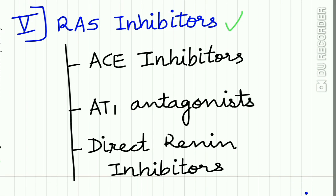The fifth group is RAS inhibitors, including ACE inhibitors, AT1 antagonists, and direct renin inhibitors, covered in a separate lecture. ACE inhibitors end in '-april' — captopril, enalapril, lisinopril, perindopril. AT1 antagonists include losartan, candesartan, valsartan, telmisartan. The direct renin inhibitor is aliskiren.